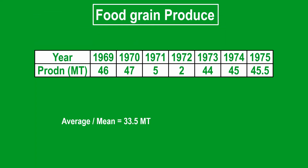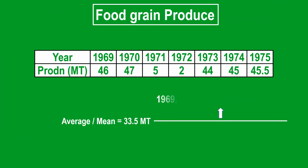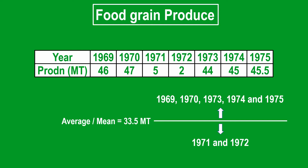Now let's take another example. The government was studying food grain output of one state across seven years from 1969 to 1975. The output measured in metric tons is laid out in a table. If we summarize this data using mean, we get 33.5 metric tons of average food grain production across the seven years, obtained by dividing 234.5 by seven. Using this average, five years appear above average, barring 1971 and 1972 where it is below average.